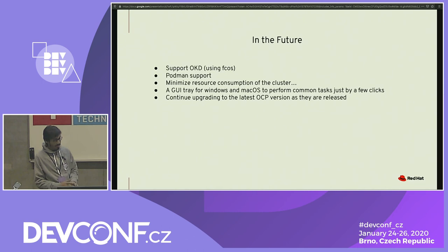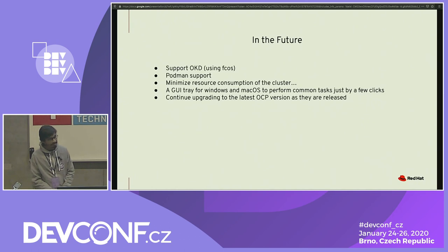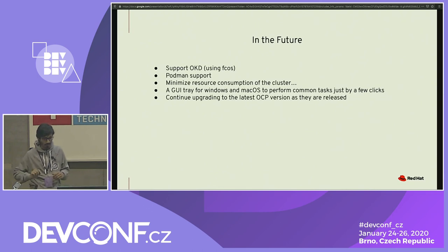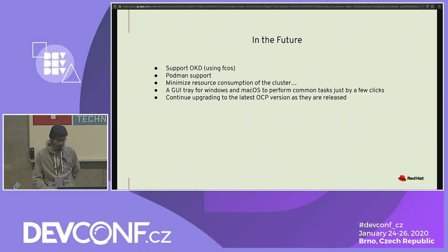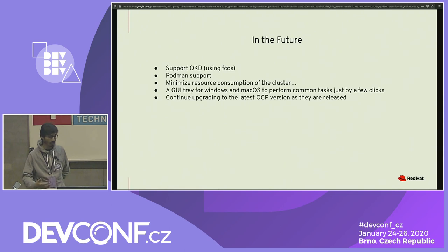Right now, since it's a full-blown OpenShift 4 cluster, it takes a lot of resources — you need a minimum of 8 GB RAM by default, whereas Minishift could run with 4 GB. There's a lot of effort going into minimizing resource consumption. Also, CRC start, stop, and delete are very common operations. If someone is working in an IDE like VS Code, they don't want to open a terminal. We want a system tray application on Mac and something on the Windows start menu so you can do those actions with a few clicks — that's being worked on for the next release. We also continuously upgrade to the latest OCP version, with a four-week release cycle.